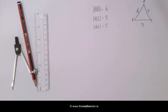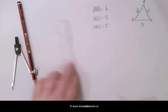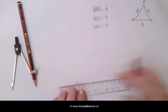To start off this construction we draw a horizontal line which is usually the longest side. In this example this is 9 cm.